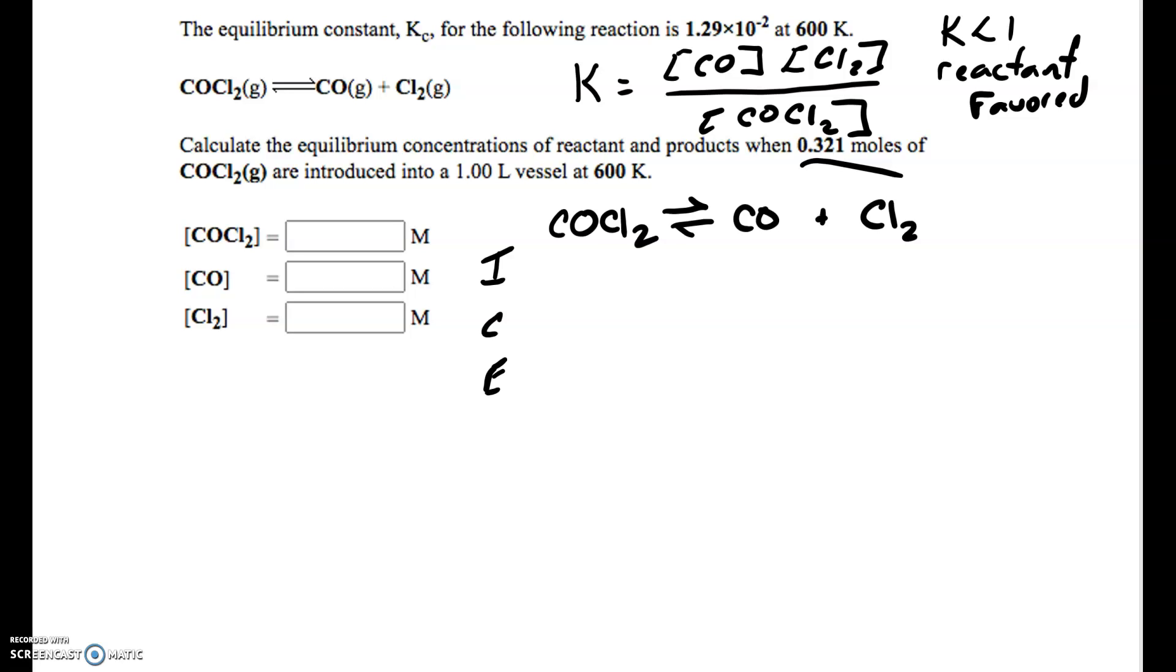So we've got 0.321 moles in one liter. And this is a Kc here. So that's going to use concentrations, concentration and molarity. And we have moles and we have the volume of one liter. So that's going to be the same as 0.321 molar, 0.321 mole per liter. I can write that in here. So that much was introduced. So that would be an initial concentration. So how much of the products do we have initially? Well, it doesn't say we have any. So if it doesn't list it, we can assume that that is 0.